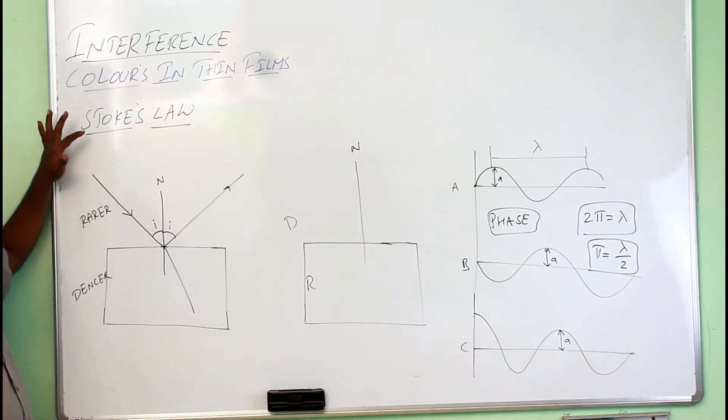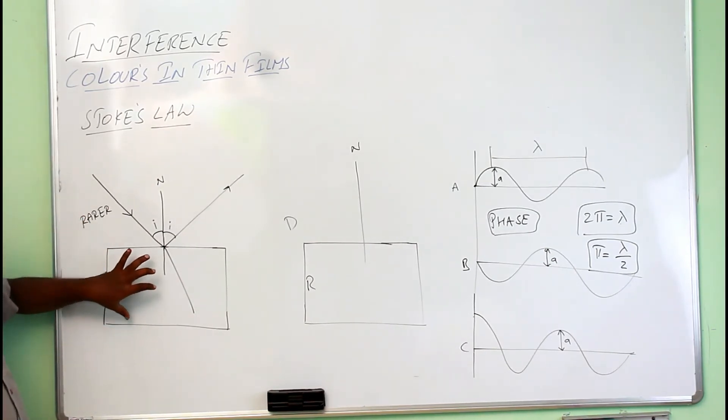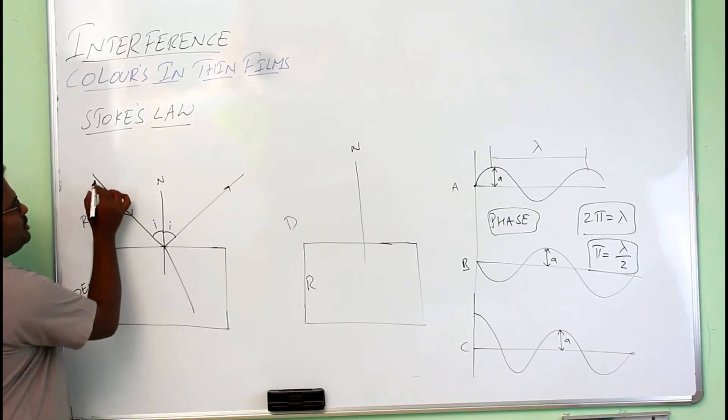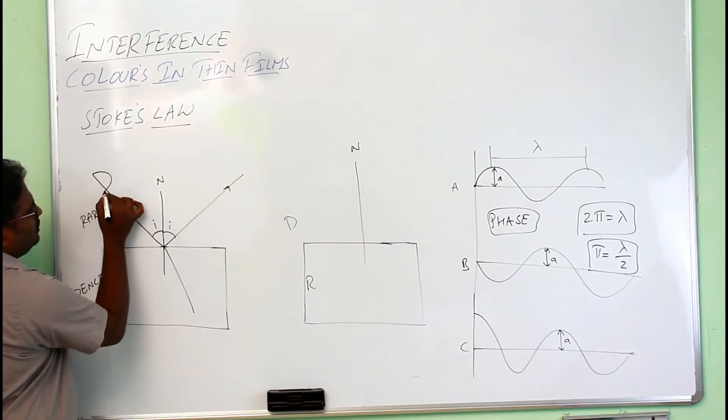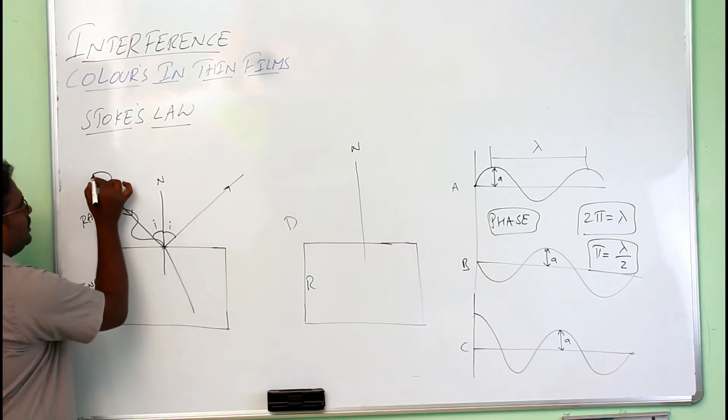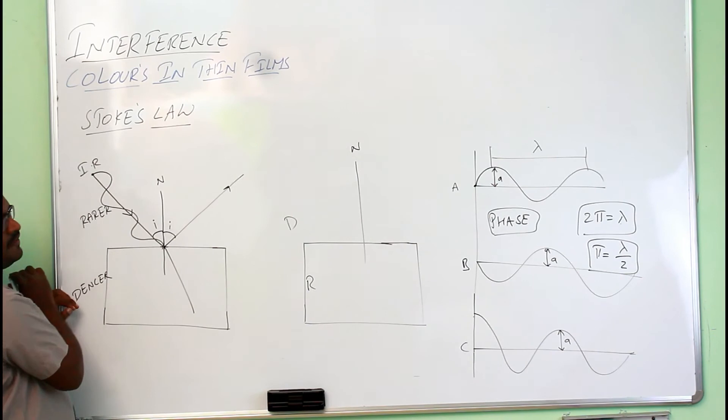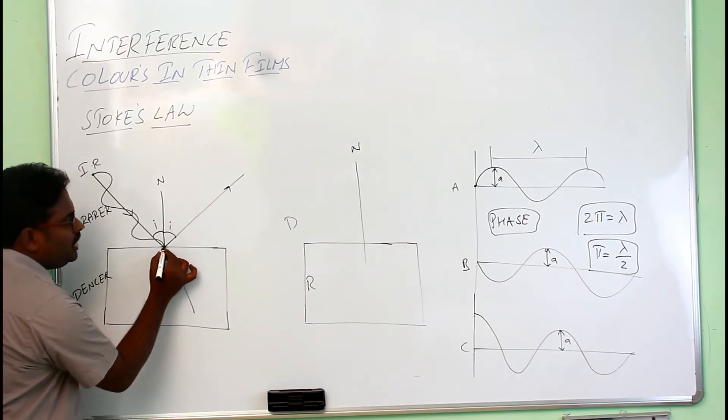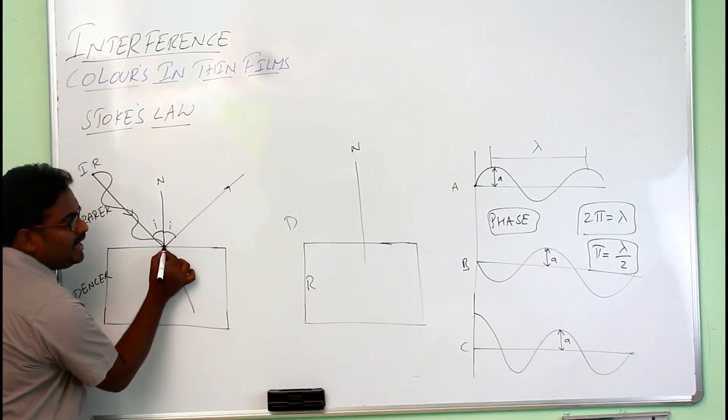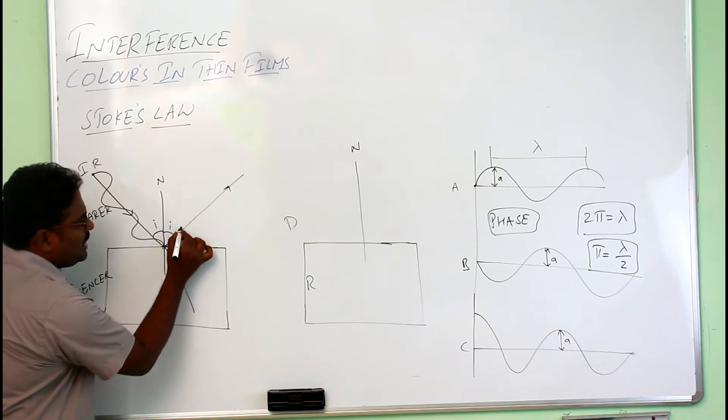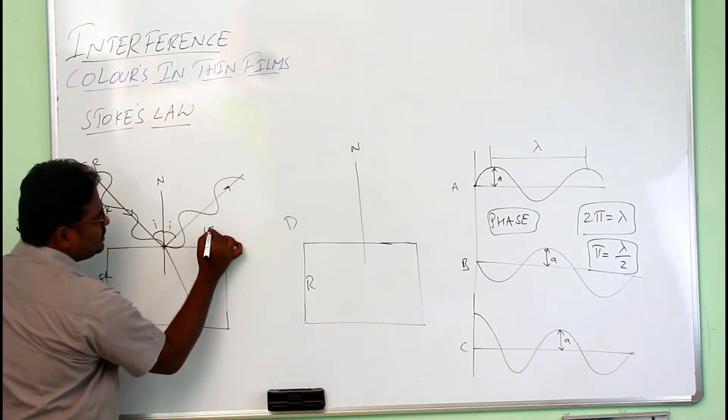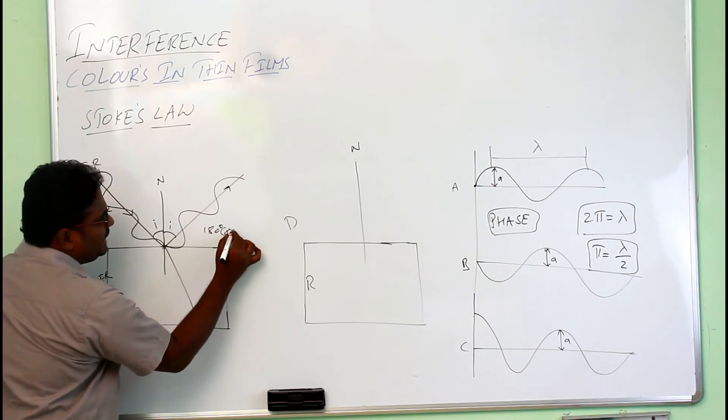According to Stokes law, when a light ray is reflecting from the denser medium, suppose if it is starting with 0 degrees, incident ray is starting, starting phase is 0 degrees. Then, according to Stokes law, the reflected light is having a phase change of 180 degrees or pi degrees.